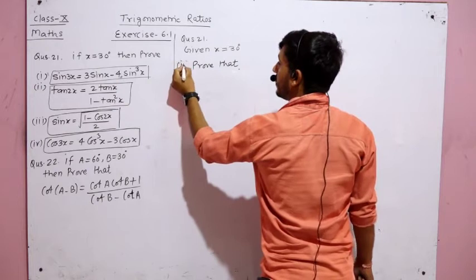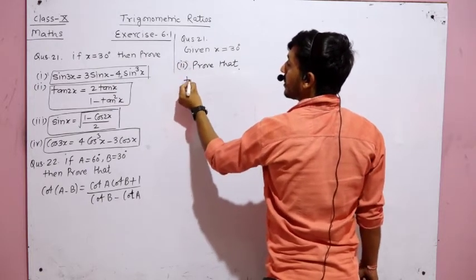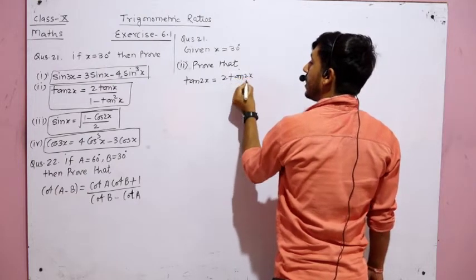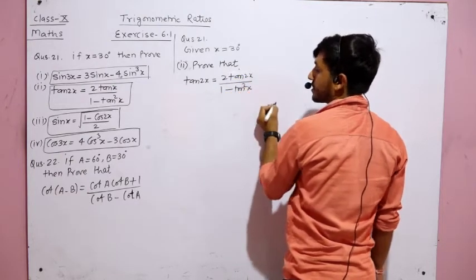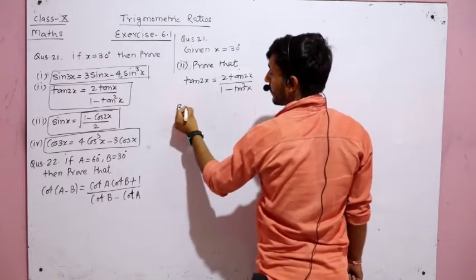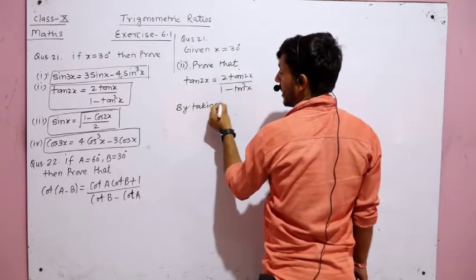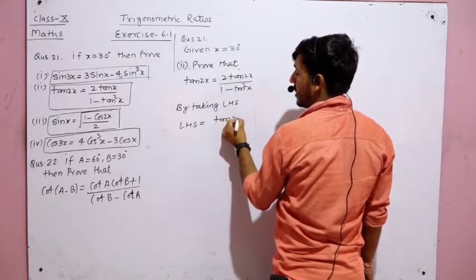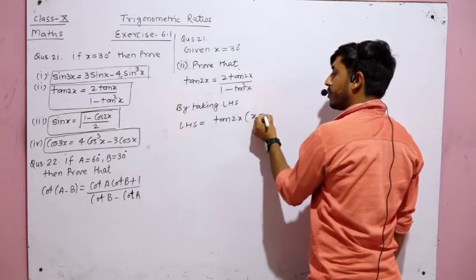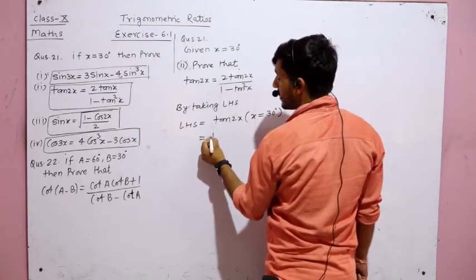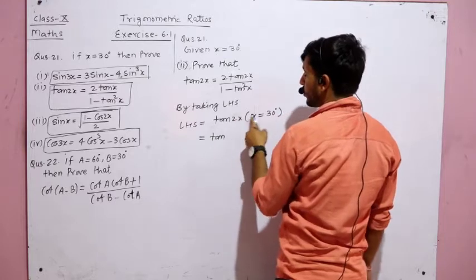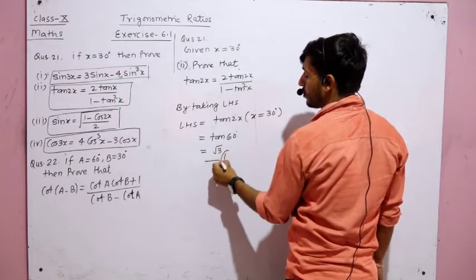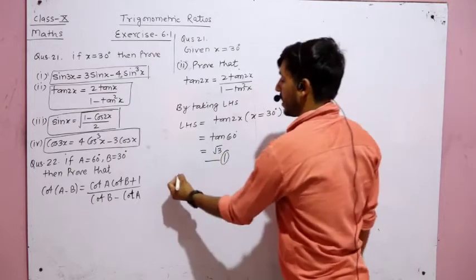For part 2, we need to prove tan 2x = 2 tan x / (1 − tan² x), with x = 30°. Taking LHS: LHS = tan 2x = tan(2 × 30°) = tan 60°. From the table, tan 60° = √3. This is equation number 1.